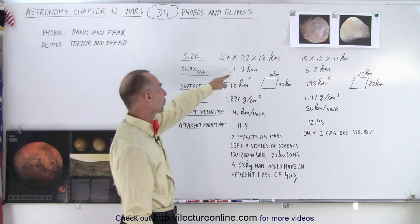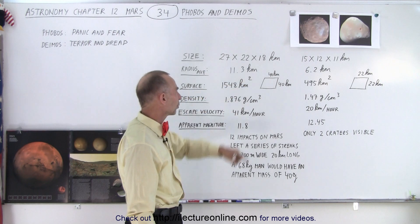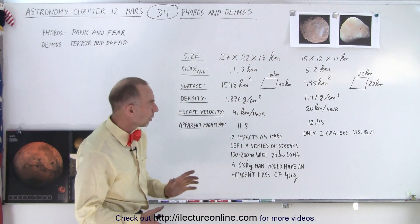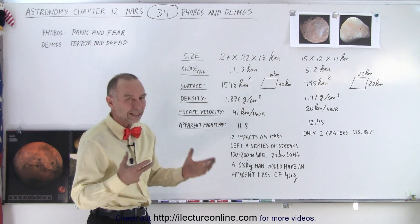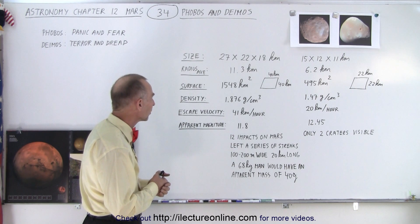The average radius is about 11.3 kilometers for Phobos and 6.2 kilometers for Deimos, so Phobos almost has twice the diameter or radius compared to Deimos.